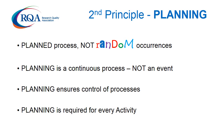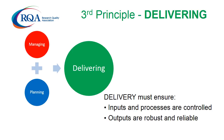Planning needs to happen for every activity to be undertaken. The third principle is delivering. Management and plans come together to provide the environment in which effective research and development is delivered. Delivery must ensure that inputs and processes are controlled to minimise or remove variability and that outputs such as results, reports, papers and so on are robust and reliable.